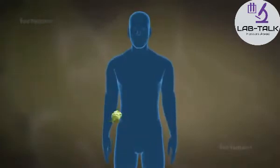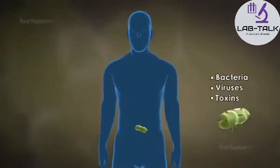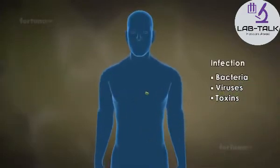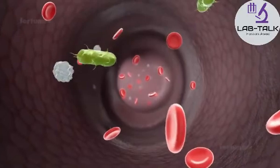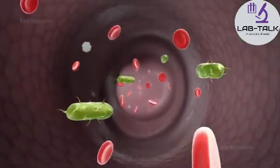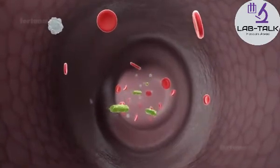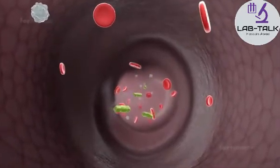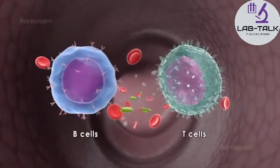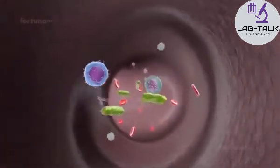When pathogens such as bacteria, viruses, or toxins enter the body and cause an infection, they will activate a natural response that is referred to as natural active immunity. Immune cells such as B cells and T cells will attack the antigen, eventually eliminating it.